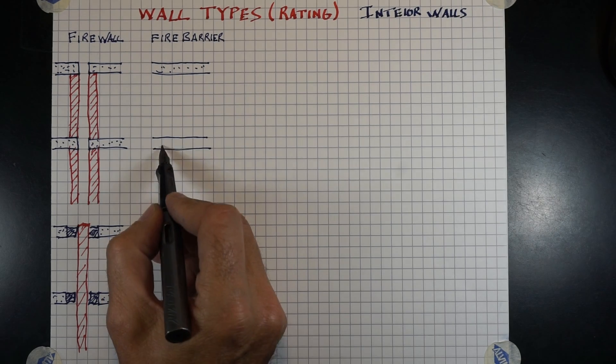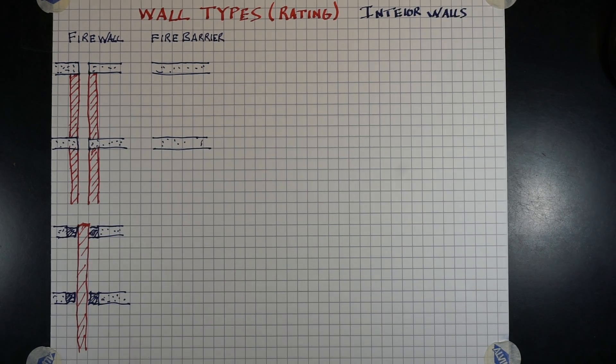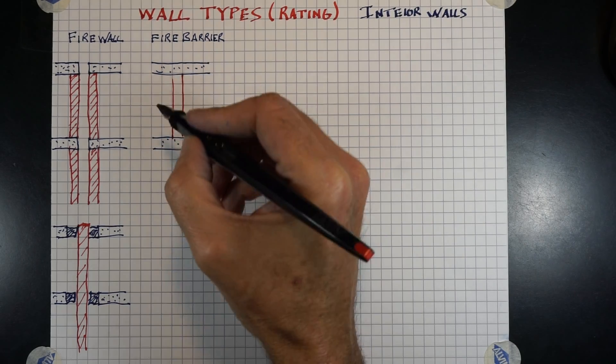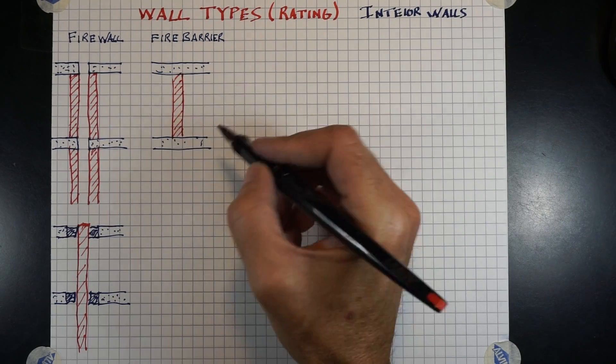Fire barrier. So we have our structure below and our structure above. Fire barrier goes from structure, floor, to structure, ceiling, or floor above.